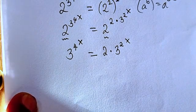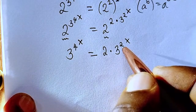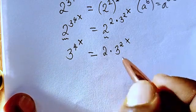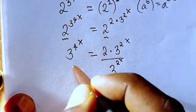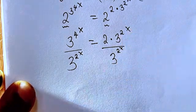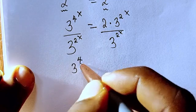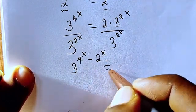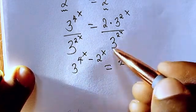Now we notice that 3 is the base on both sides. We divide both sides by 3 to the power of 2 to the power of x. Because the bases are the same, we subtract the exponents, giving 3 to the power of (4 to the power of x minus 2 to the power of x) equals 2.